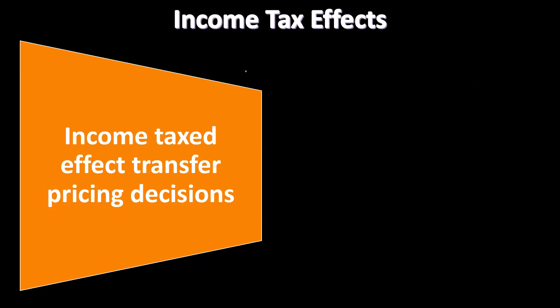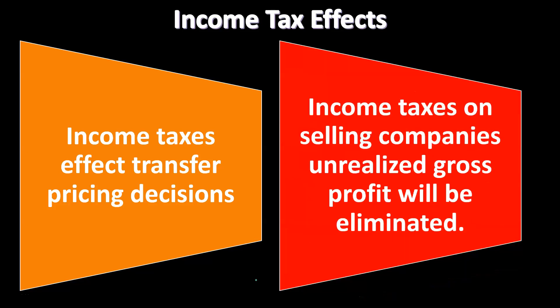Income taxes affect transfer pricing decisions. We want to take into consideration the tax effects when we have intercompany transfers of inventory from one entity to another that will then be consolidated. Income taxes on the selling company's unrealized gross profit will be eliminated. If you had a sale from one company to a subsidiary and the subsidiary had not yet sold that inventory, that's unrealized gross profit — a phantom sale that didn't really happen — therefore the tax related to it should be eliminated.